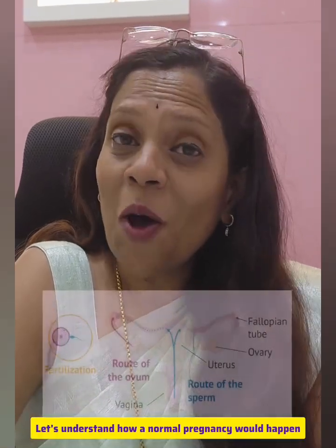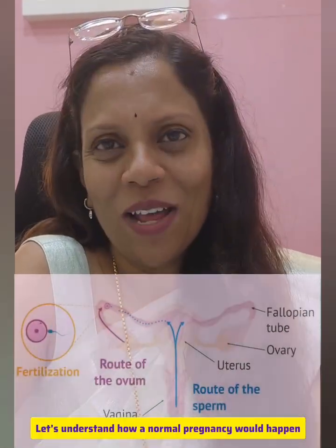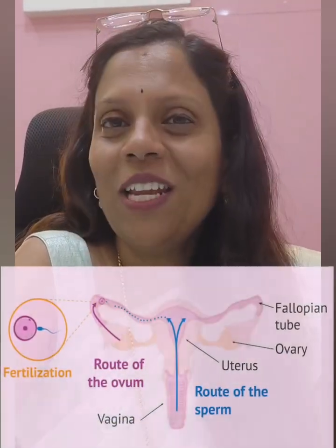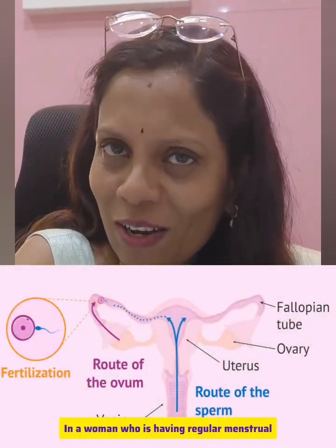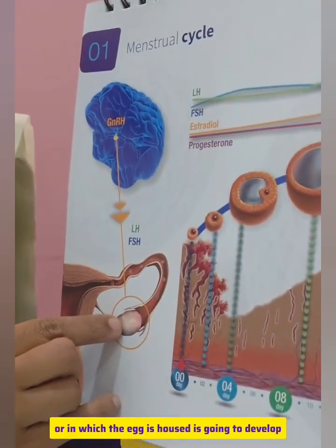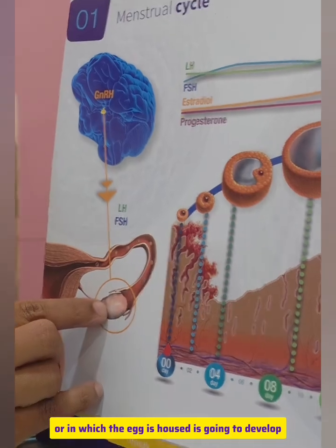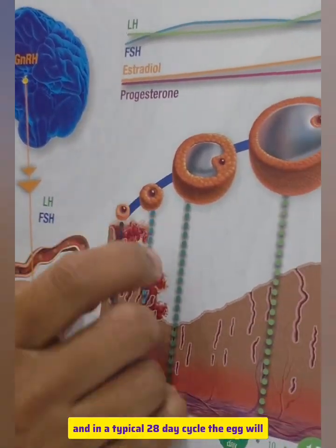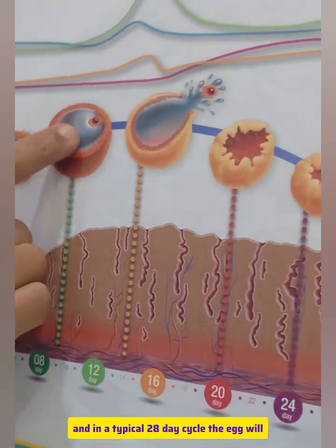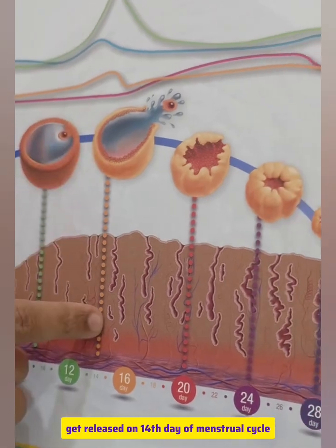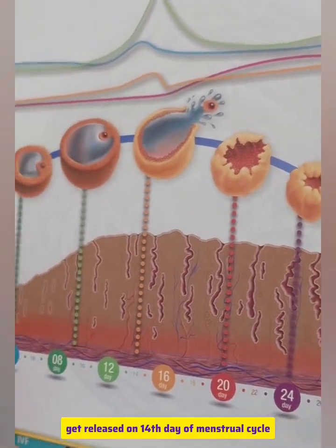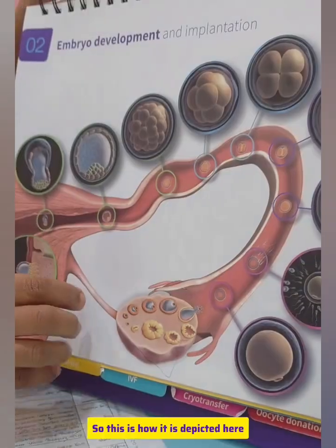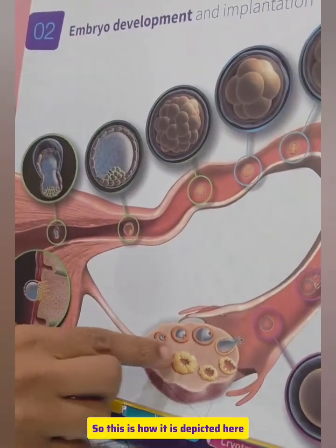Let's understand how a normal pregnancy would happen in a woman who is having regular menstrual cycles. Under the influence of hormones, the follicle in which the egg is housed is going to develop. In a typical 28-day cycle, the egg will get released on the 14th day of the menstrual cycle, as depicted here.